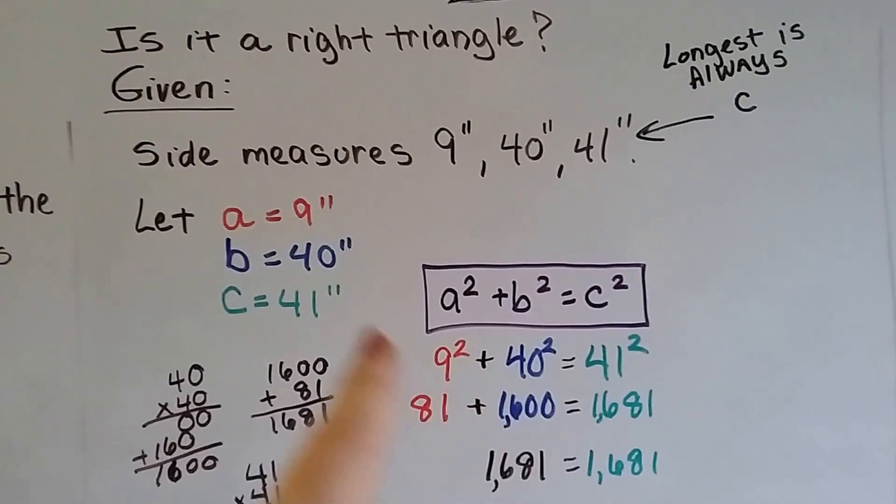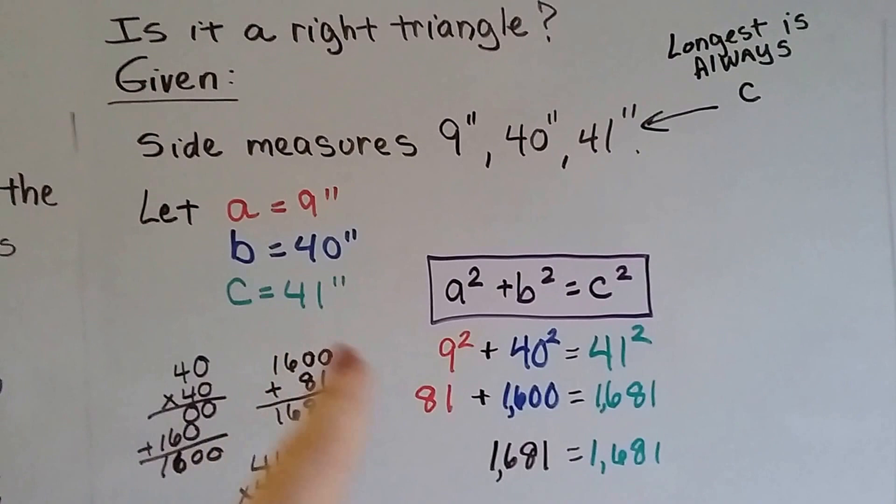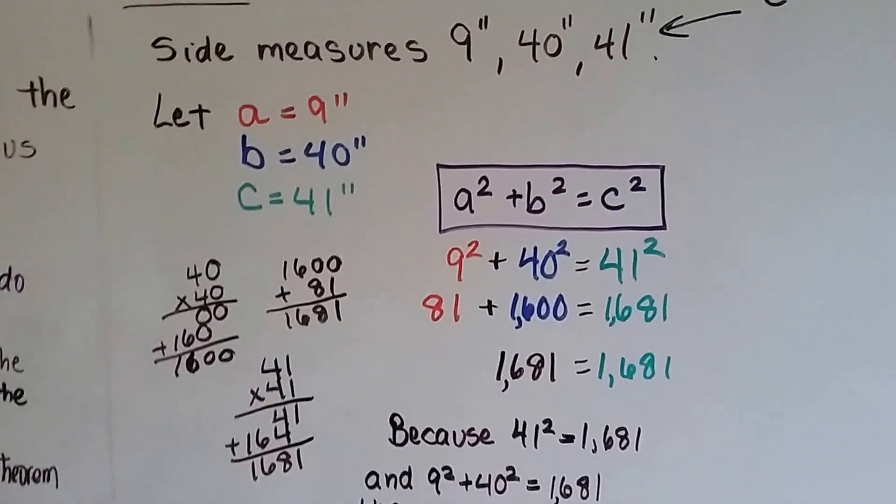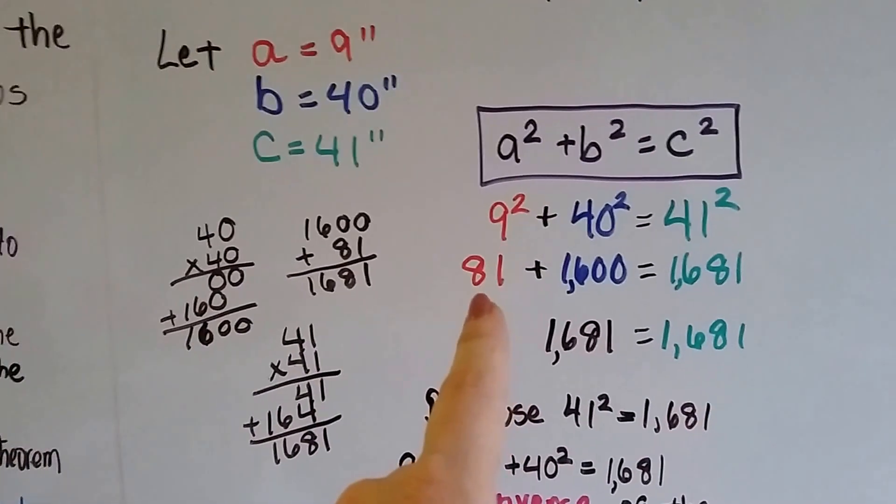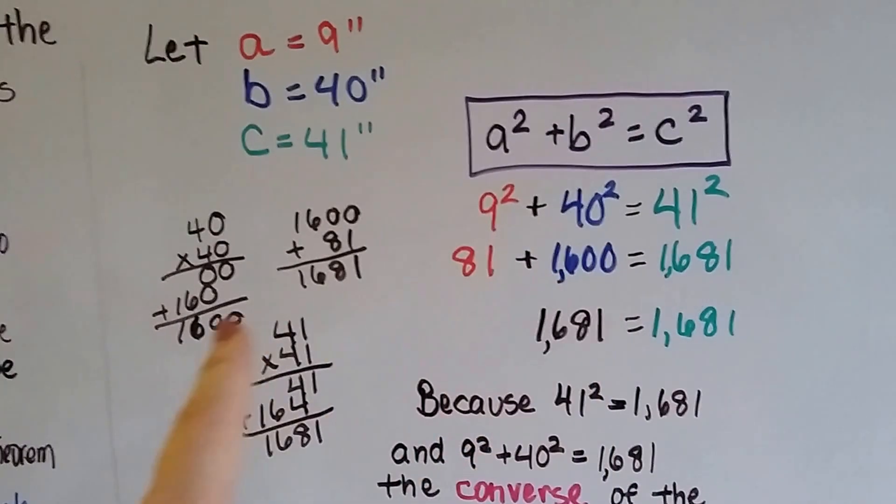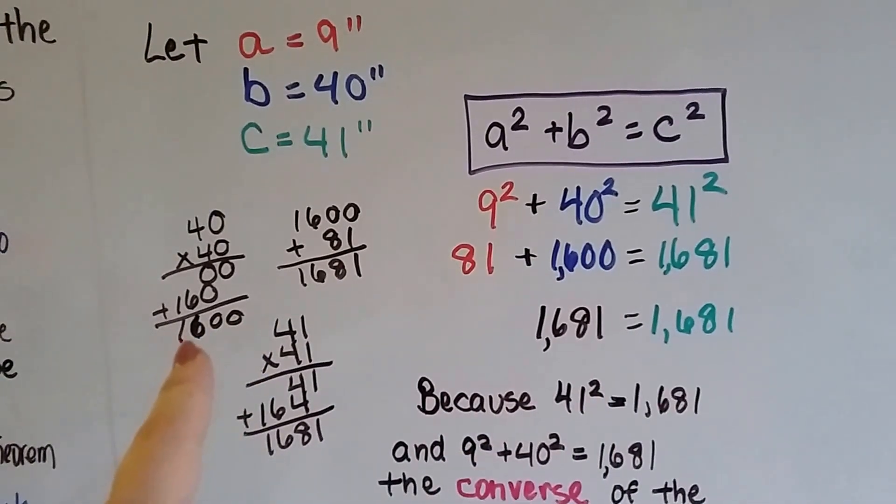So that gives us 9 squared plus 40 squared equals 41 squared. We do the math. 9 times 9 is 81, and 40 times 40 is 1600.